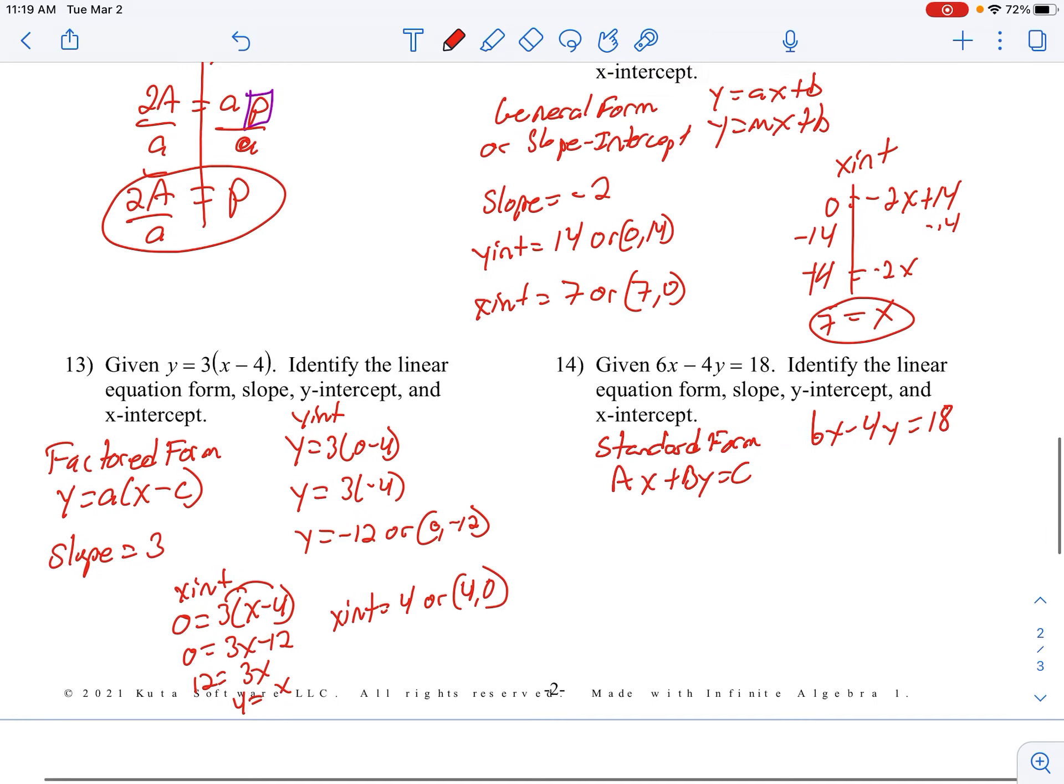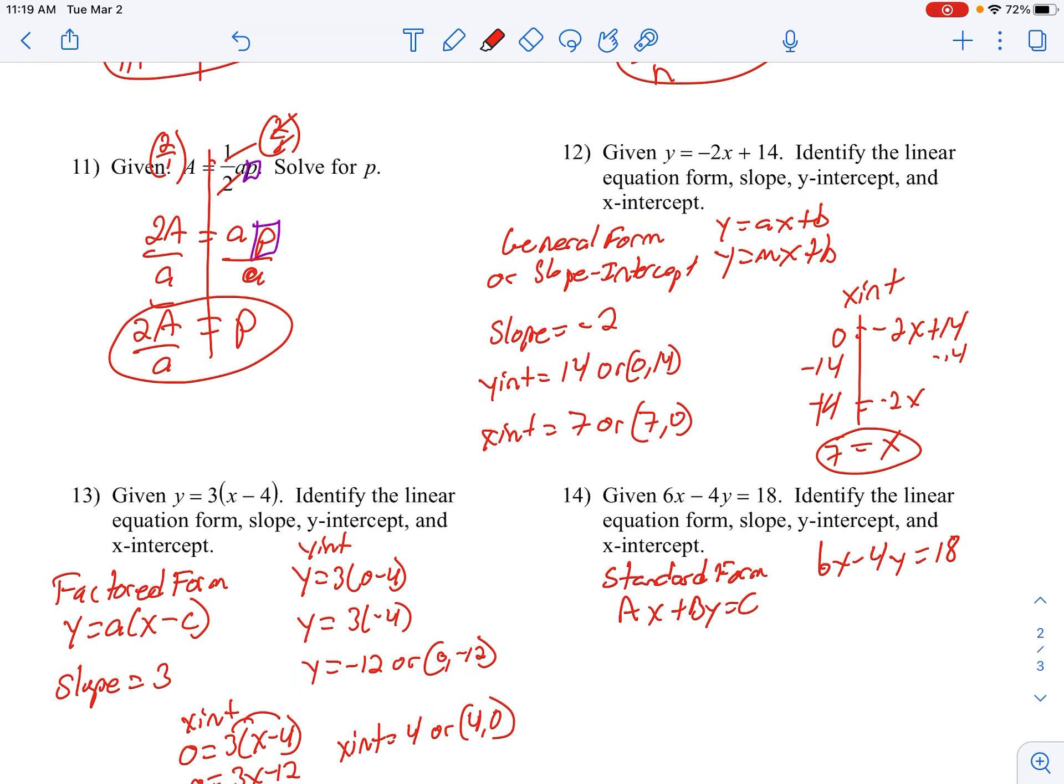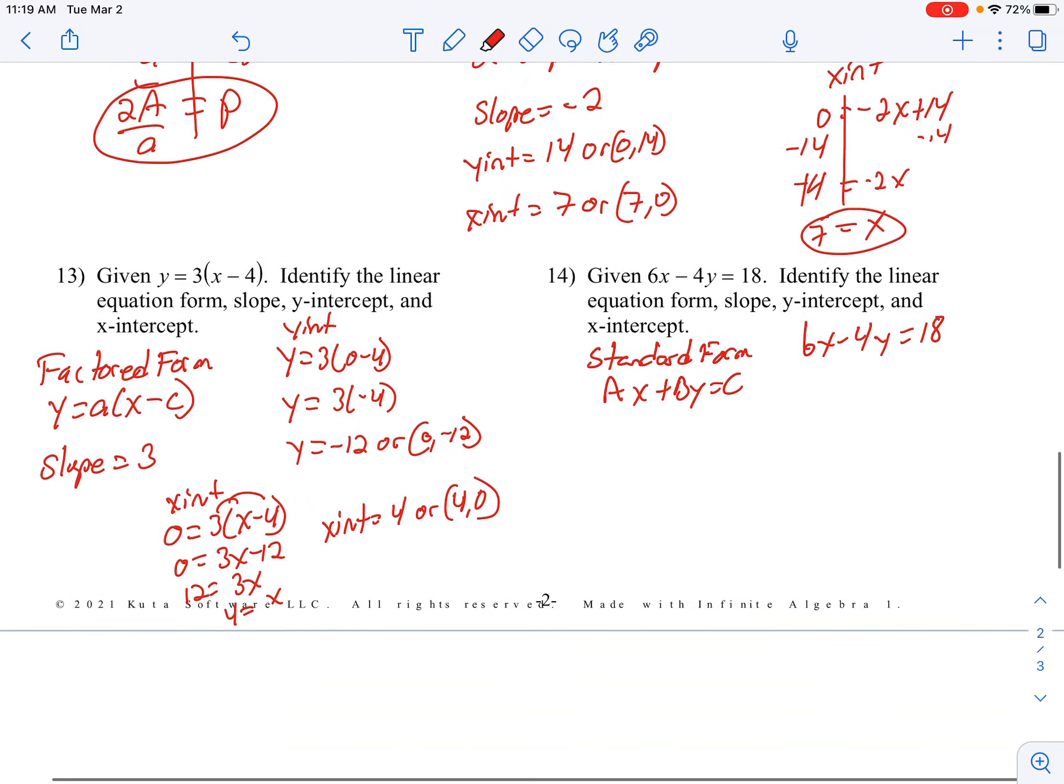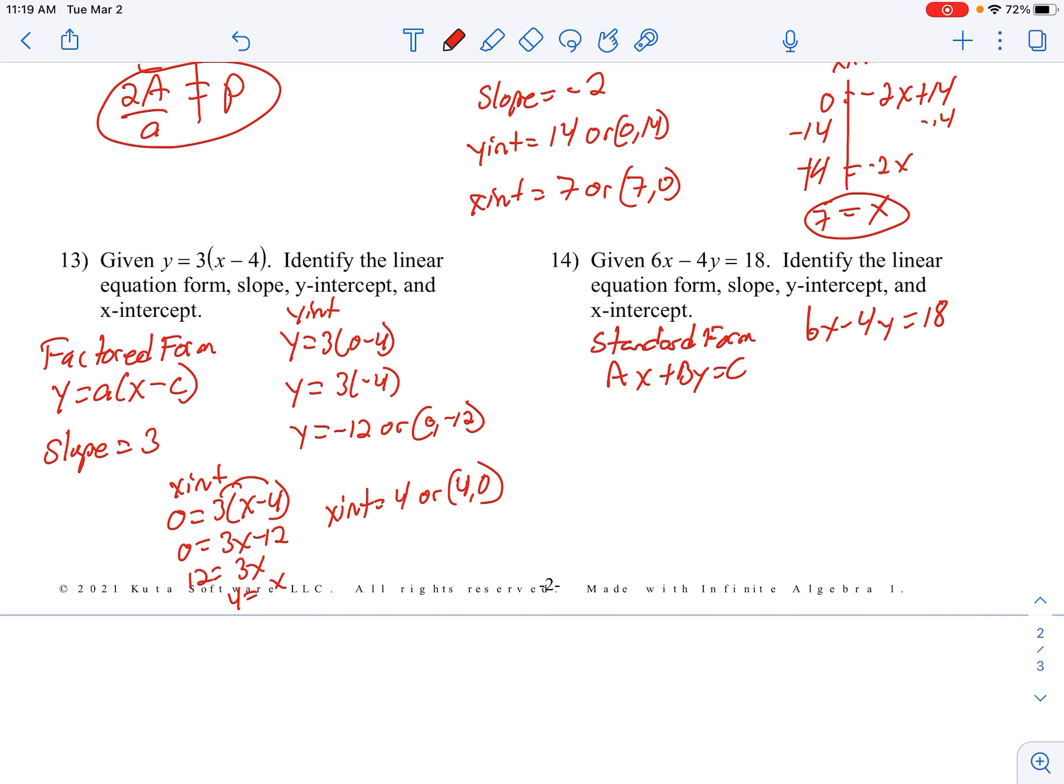So with that equation, I want to go ahead and rearrange it, solve it for Y, to get it into general form like I have up here on the previous one. Because then that will give me my slope, and then that will give me the Y-intercept as well.